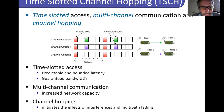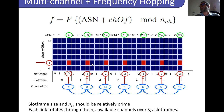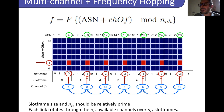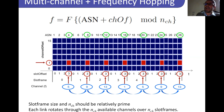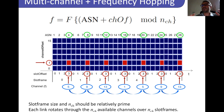Channel hopping is adopted to mitigate interference effects on a single frequency. The standard defines a fixed channel-hopping sequence shared across all devices in the network. By adopting this sequence over time, devices hop from one frequency to another, performing transmissions on different frequencies. If one frequency is jammed by an interfering system, only a small amount of transmissions are affected, and thanks to retransmission on different frequencies, this problem can be resolved.